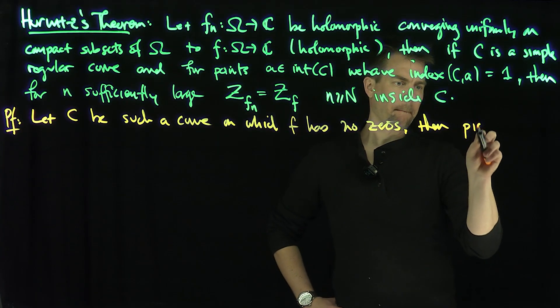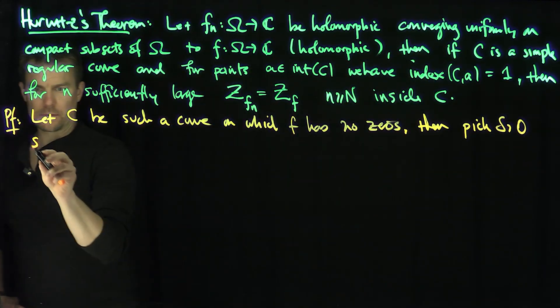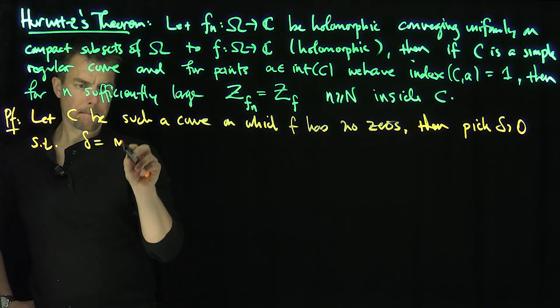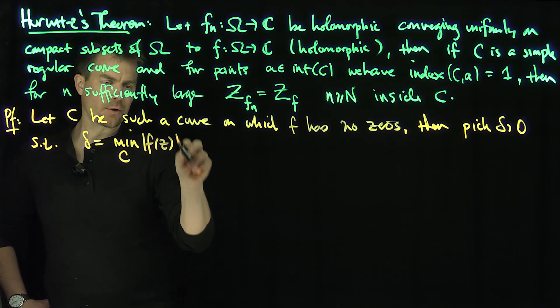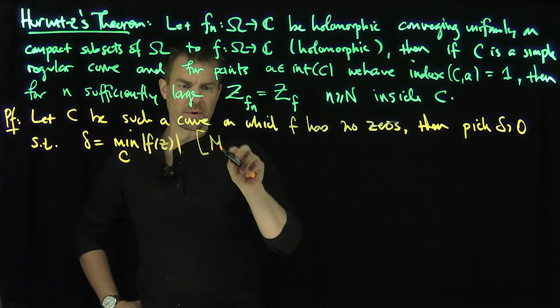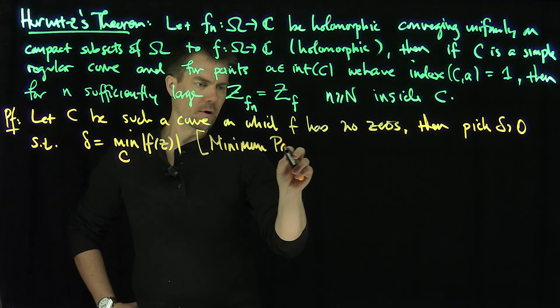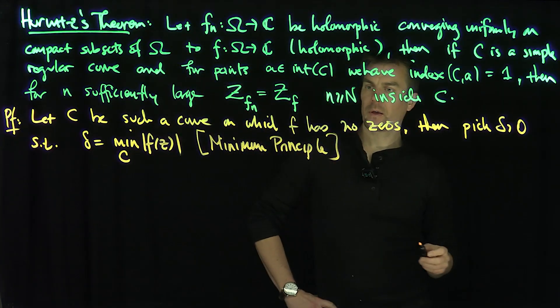pick delta greater than zero such that delta is the minimum over the circle of |f(z)|, and I can do this by the minimum principle for holomorphic functions. Use the minimum principle, then